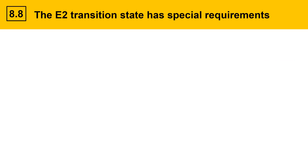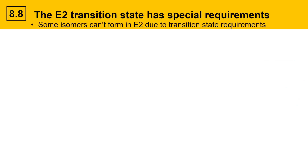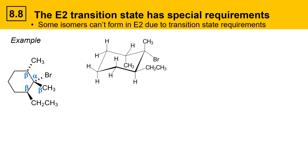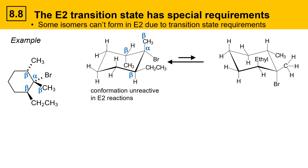Let's look at another example showing how some isomers can't form in E2 due to transition state requirements. This molecule has a bromo group at the alpha position as well as three unique beta positions. Drawing it in chair form, we can identify the alpha position, the beta position in the ring, the beta position on the methyl group outside of the ring, and the beta position that contains the ethyl group. The initial structure is unreactive in E2 because the bromine isn't coplanar with any beta hydrogens.